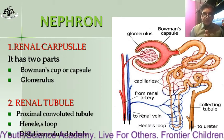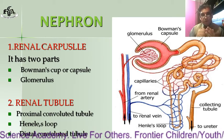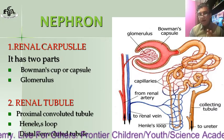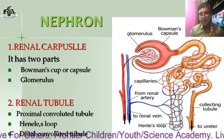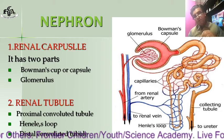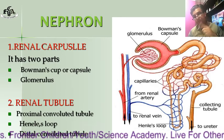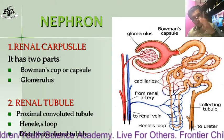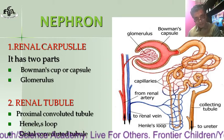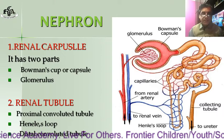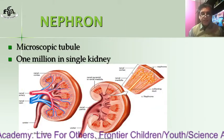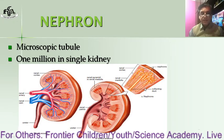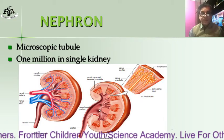The ending of several nephrons opens into a common duct called the collecting duct. This collecting duct then opens into the pelvis region, as discussed earlier and as shown in this diagram. You can see the pelvis region, the collecting duct, and the nephrons.